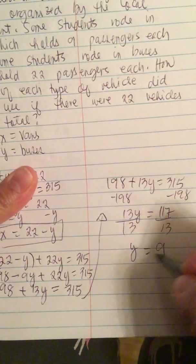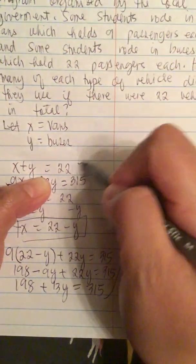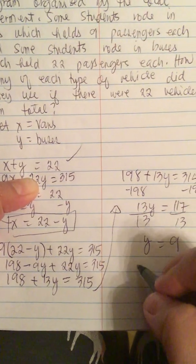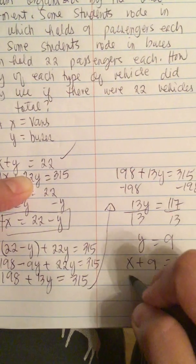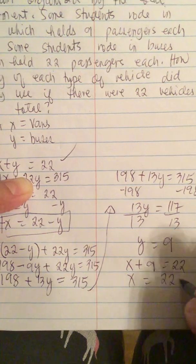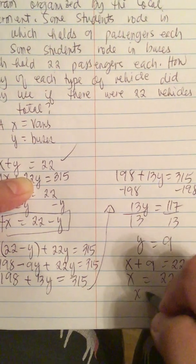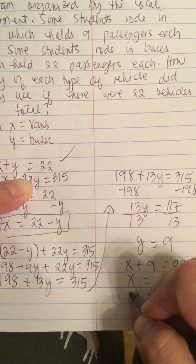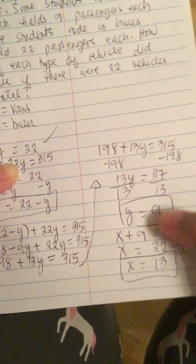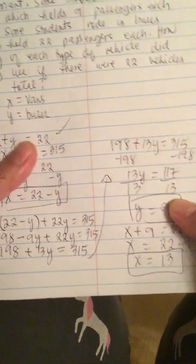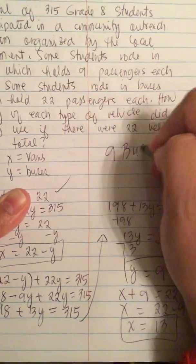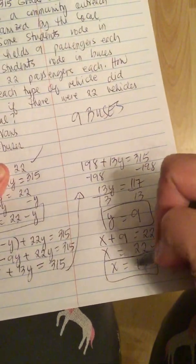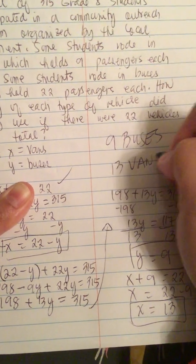So now that we know y, we can solve for x. We can use this equation because it's easier. So x plus 9 is equal to 22. That means x is equal to 22 minus 9 or x is equal to 13. So there were 9 buses and x is vans. So 13 vans.